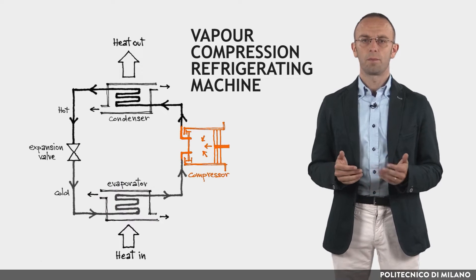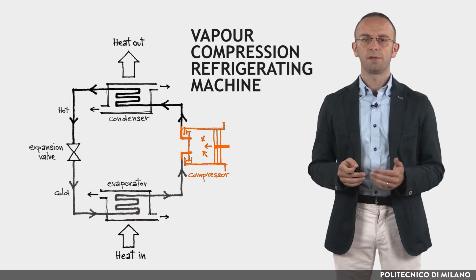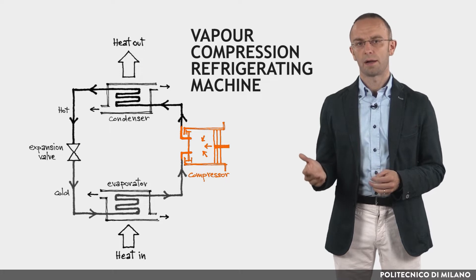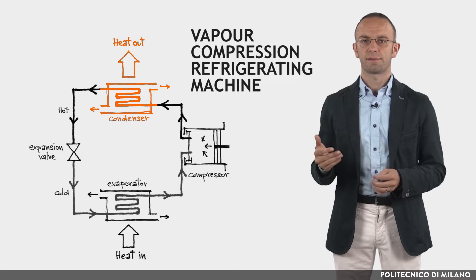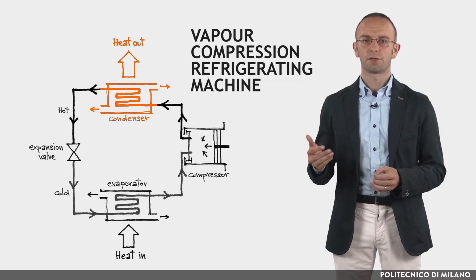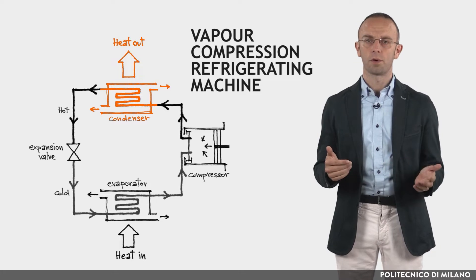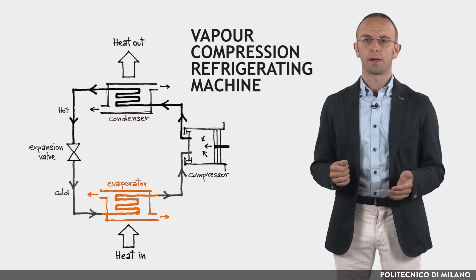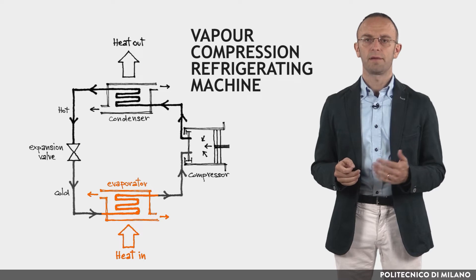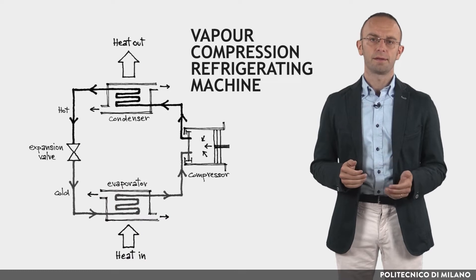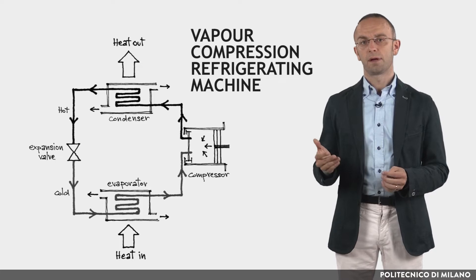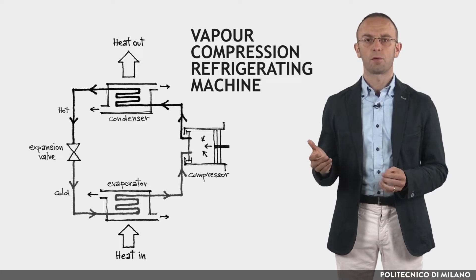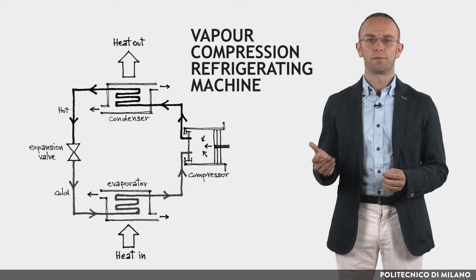The refrigerant enters the compressor as a vapor and is compressed to a higher pressure and consequent higher temperature. In the condenser, the circulating refrigerant rejects heat from the system, and the rejected heat is carried away by either water or air. In the evaporator, heat is subtracted from the environment by the evaporation of the liquid part of the cooled refrigerant mixture. The greater the temperature difference between condenser and evaporator, the greater the required pressure difference, and consequently more energy is needed to compress the fluid.